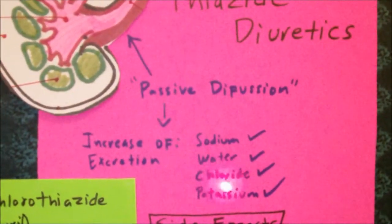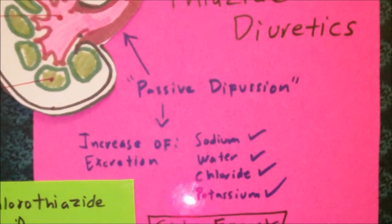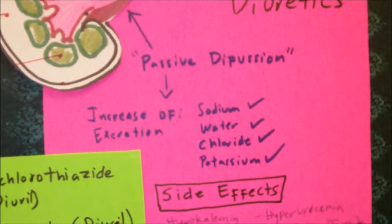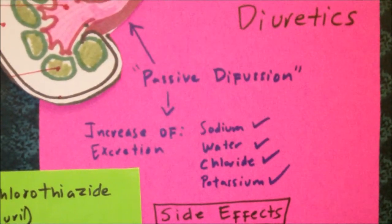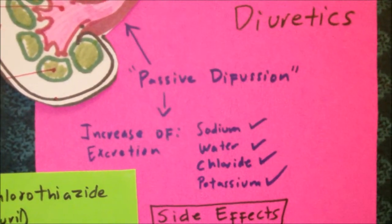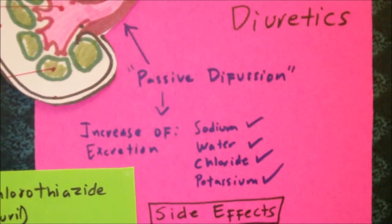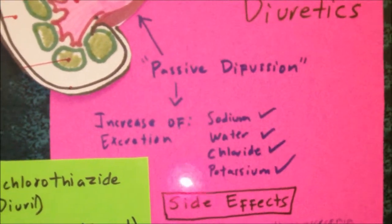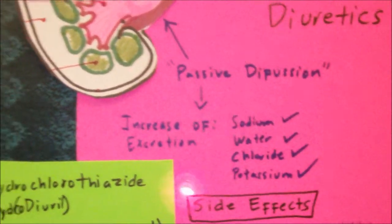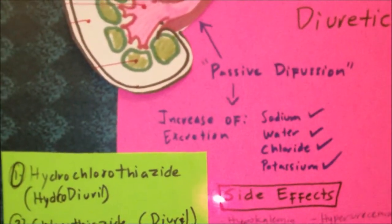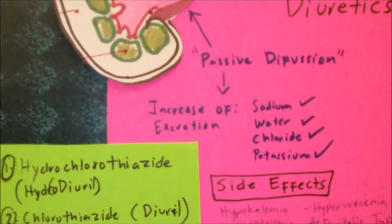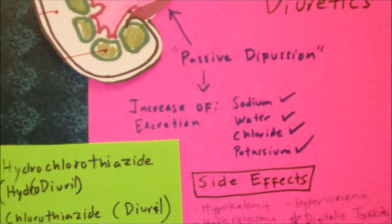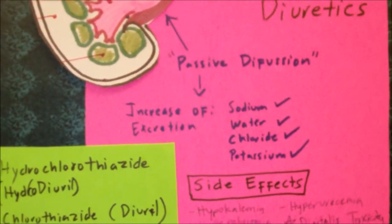But not only that, it also secretes potassium. So basically when our patients are using thiazide diuretics, they're losing not only water, but sodium, potassium, and chloride. And the loss of potassium can be a big problem for our patients.